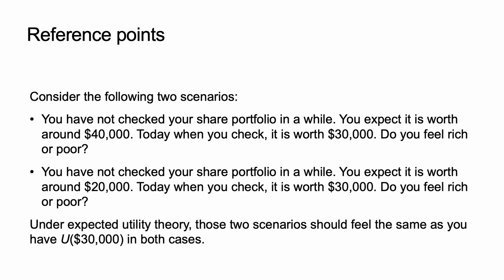You have not checked your share portfolio in a while. You expect that the portfolio is worth around $40,000. Today when you check, it is worth $30,000. Do you feel rich or poor? You have not checked your share portfolio in a while. You expect that the portfolio is worth around $20,000. Today when you check, it is worth $30,000. Do you feel rich or poor? Under expected utility theory, those two scenarios should feel the same as you have utility of $30,000 in both cases. However, in the first case you feel poor, and in the second case you feel rich. This is because you are comparing the outcome to your reference point of $40,000 in the first case and $20,000 in the second case.